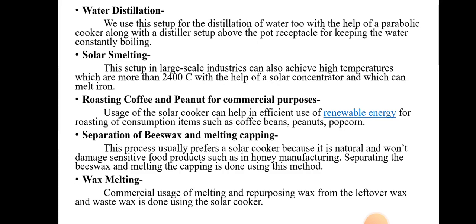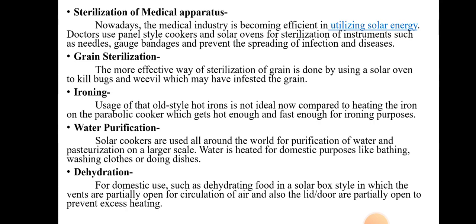For solar melting and roasting coffee and nuts for commercial purposes, solar cookers are also used. One of the important applications of the solar cooker is wax melting. Commercial use of melting and refreezing wax from leftover and waste wax is done using the solar cooker, so that waste wax is melted and brought back into use.